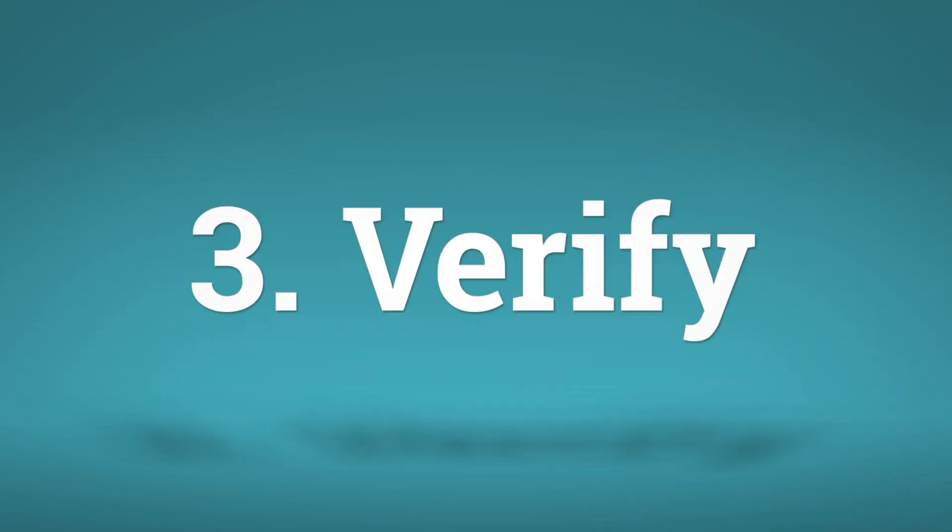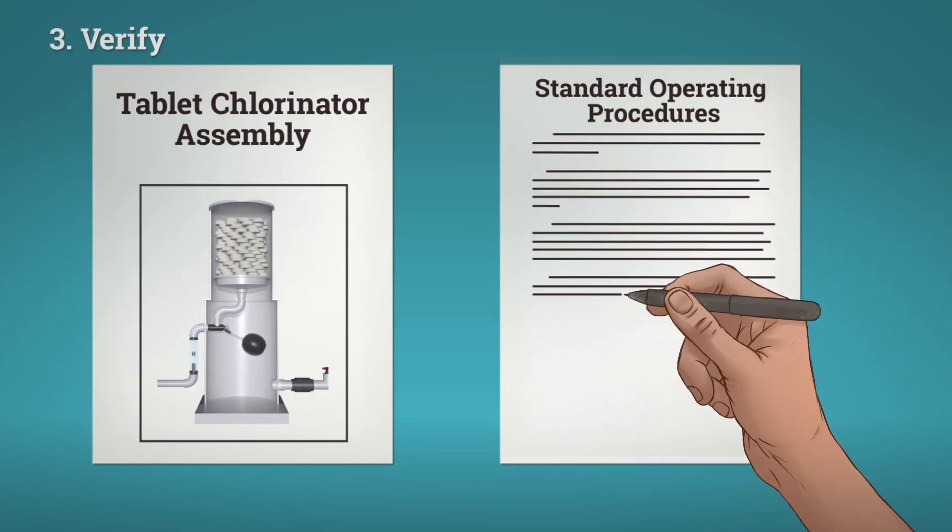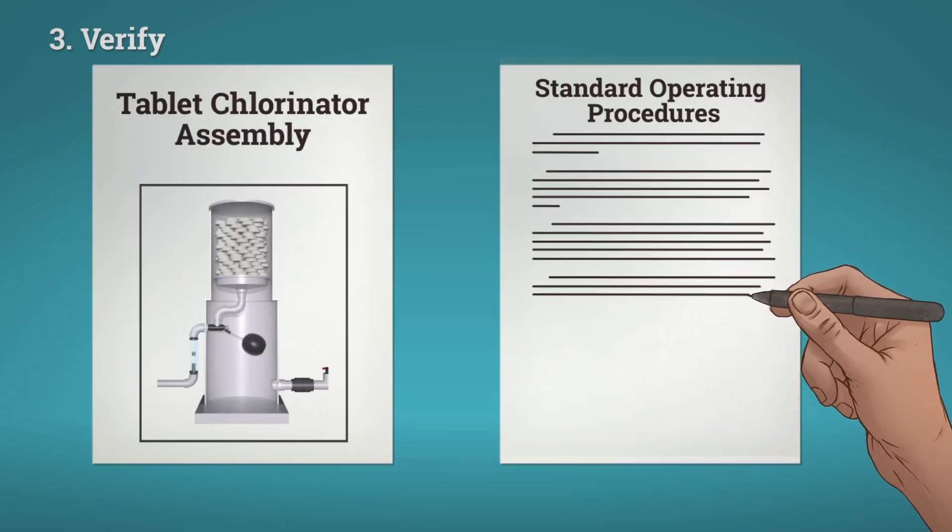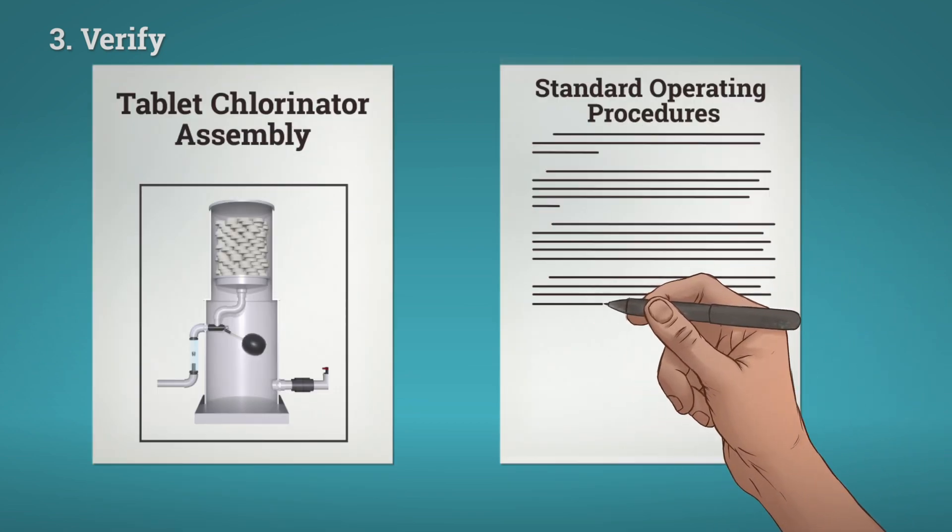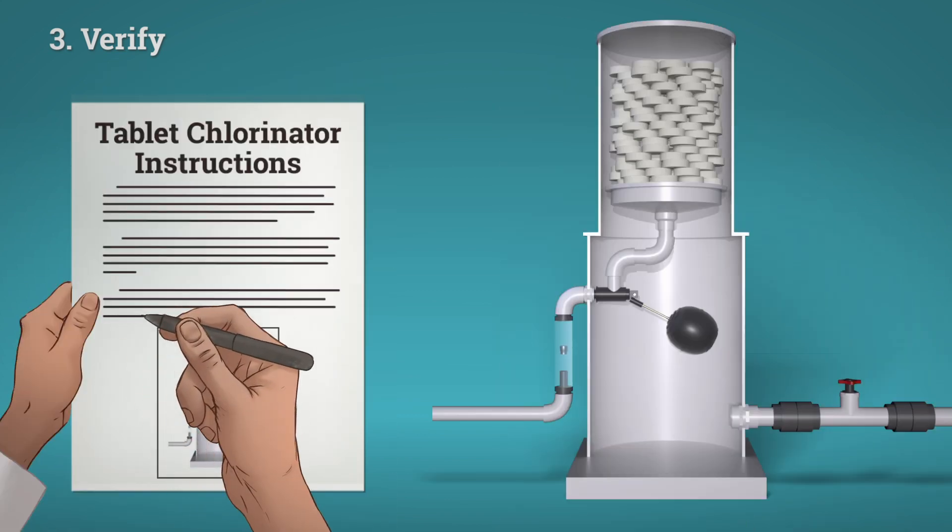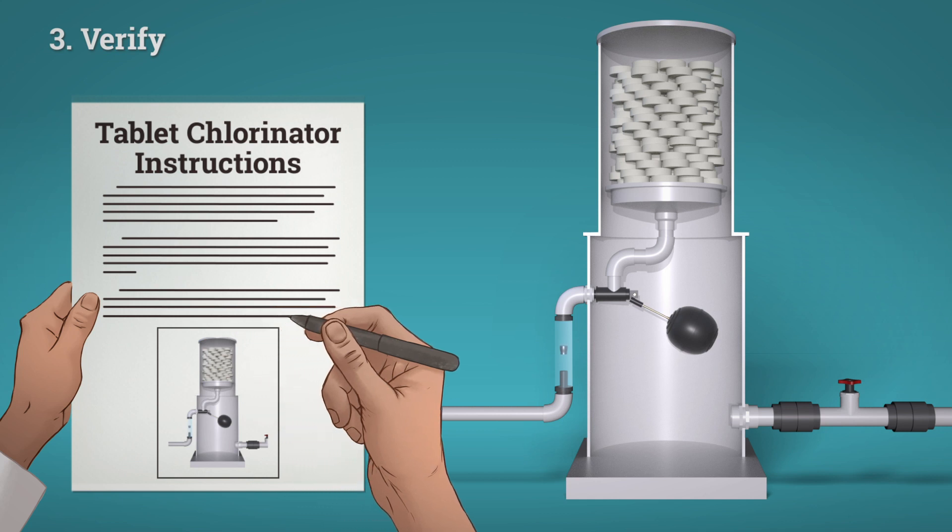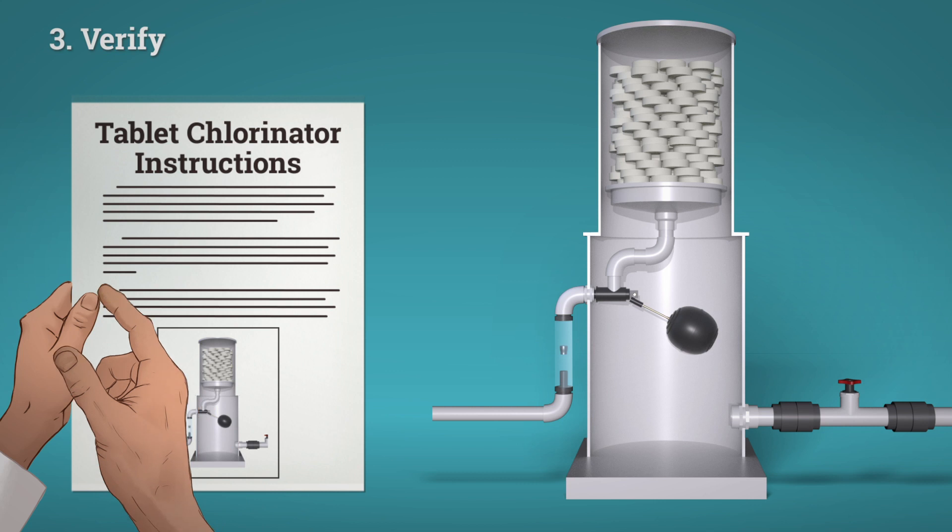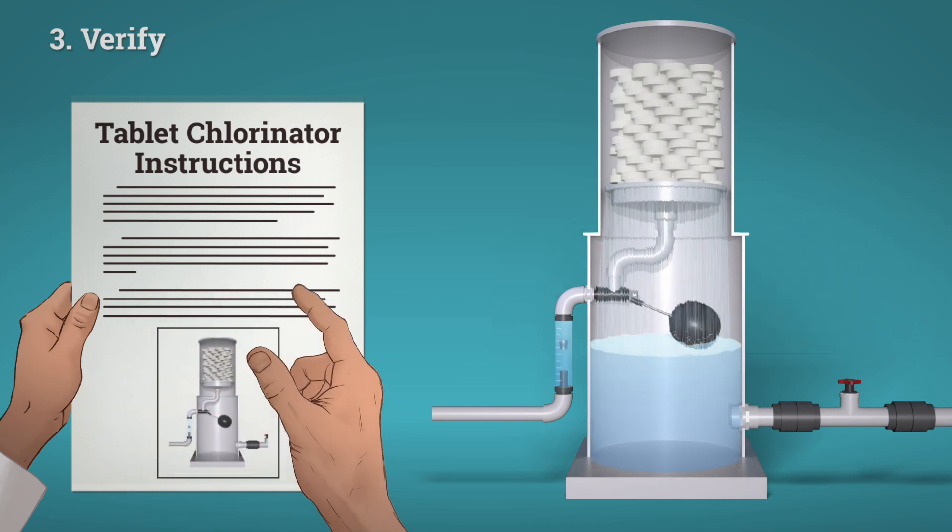Number three, verification. Whichever system you pick, you will write standard operating procedures, which are a set of instructions to make sure the system is used correctly. You verify that your employees are always using the system the way you specify. Follow the instructions and use the system properly. If you don't verify, you can't be sure the treatments are working.